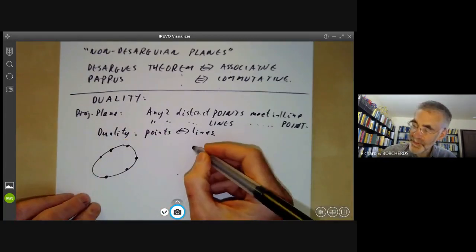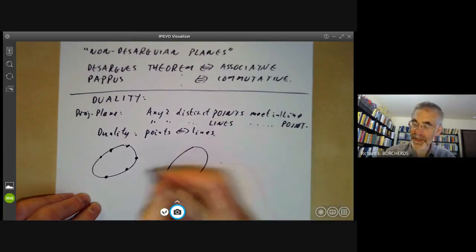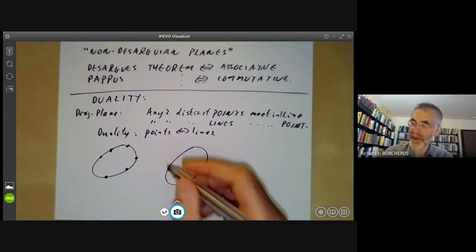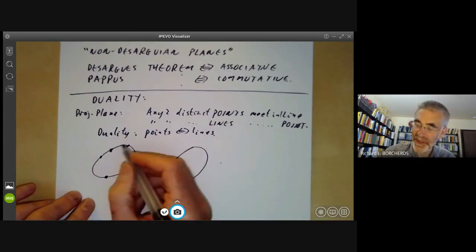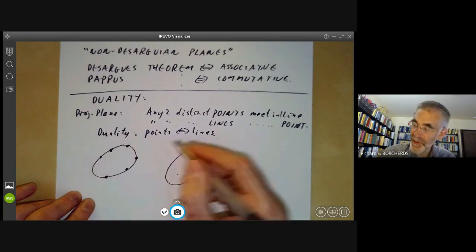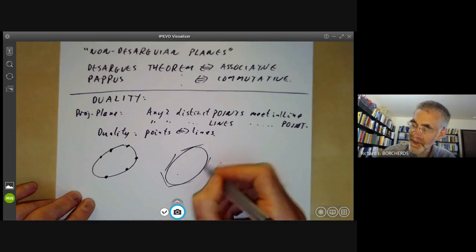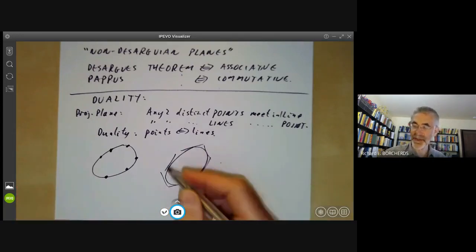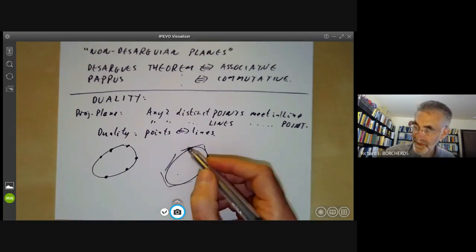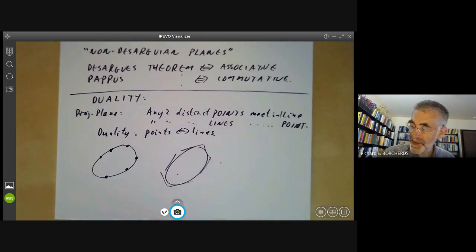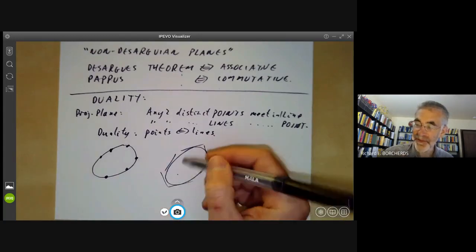So a fairly typical example is Pascal's theorem. So you remember Pascal's theorem, you take a conic and take six points on it and fiddle around with them to do something or other. The dual theorem - you take a conic, it turns out the dual of a conic is the same as a conic. And instead of taking six points on the conic, you take six lines tangent to the conic. And then there's a sort of dual version of Pascal's theorem saying if you take the three points given by intercepting these lines in pairs, they all meet.